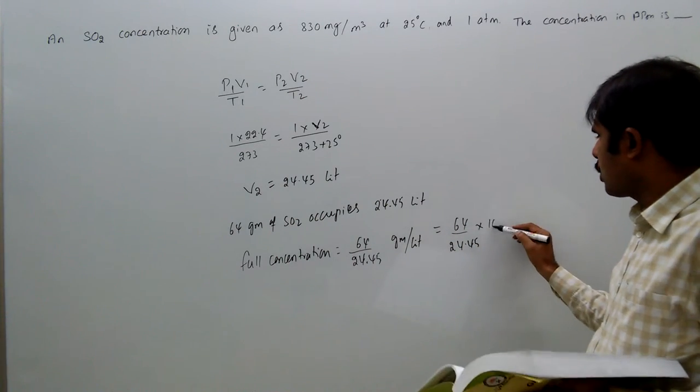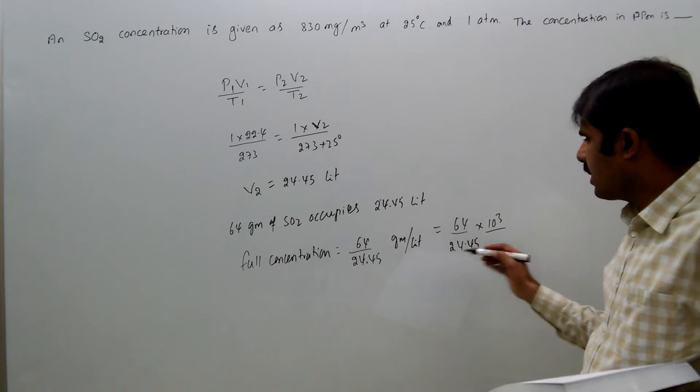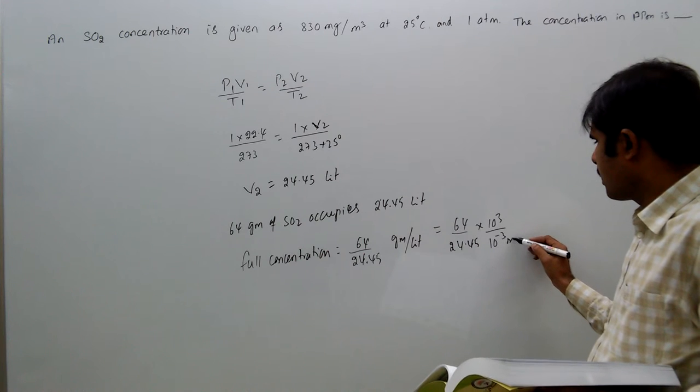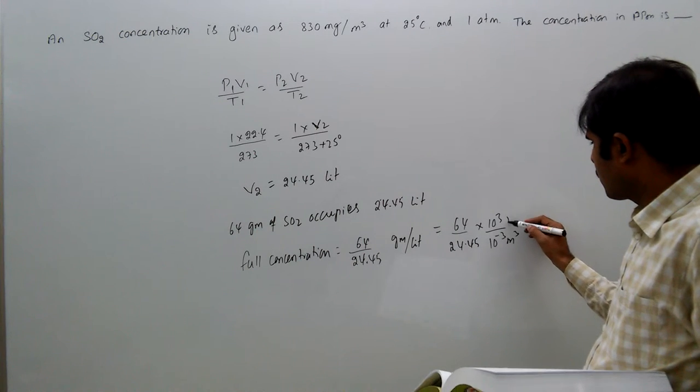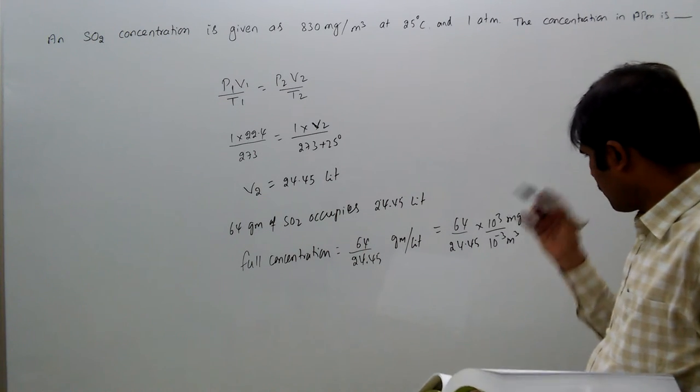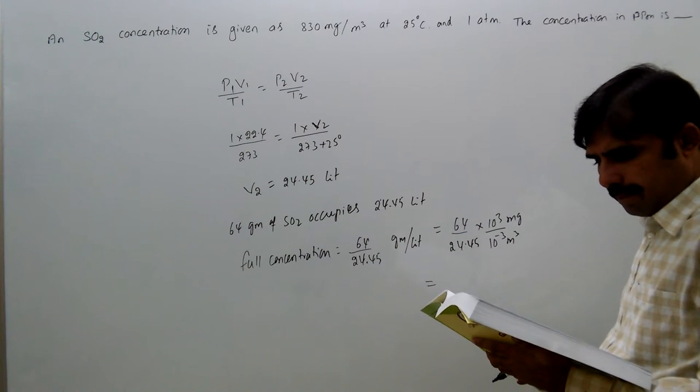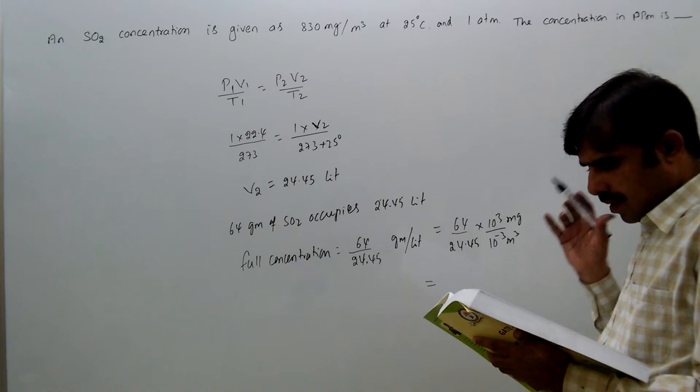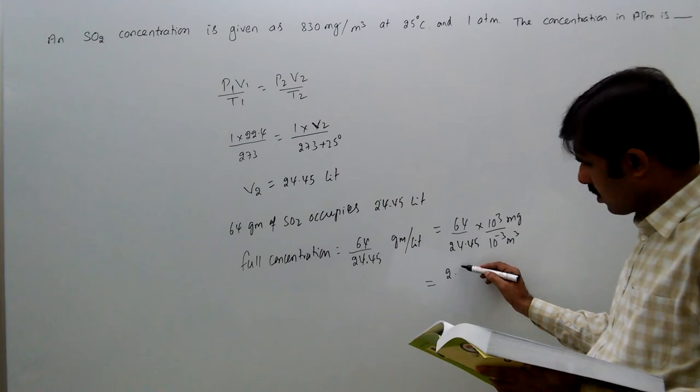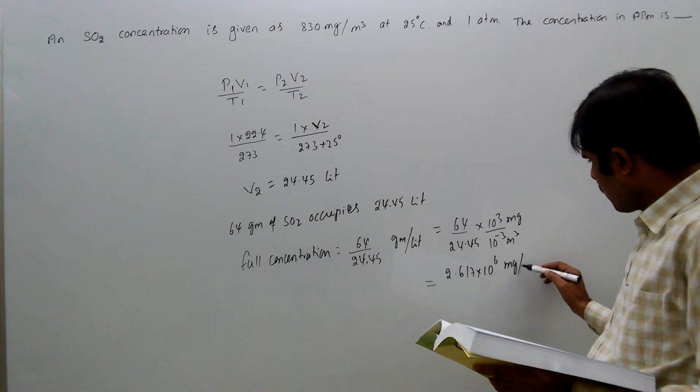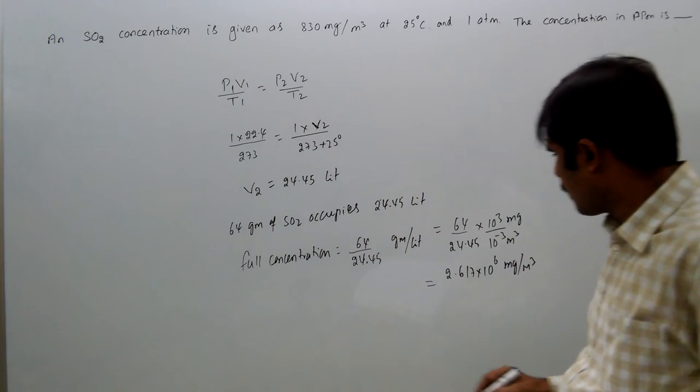So, gram equal to 10 cube mg, liter means 10 power minus 3 meter cube. So, mg per meter cube, that equal to 2.617 into 10 power 6 mg per meter cube. This is full concentration.